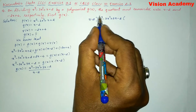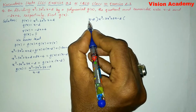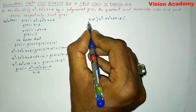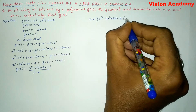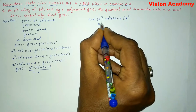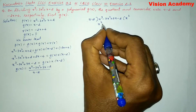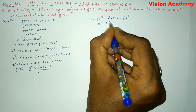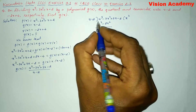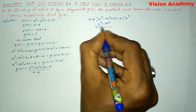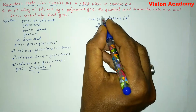Let us consider the first term of the dividend and the first term of the divisor. What do we need to multiply with x to get x³? We need to multiply x². So x² into x is x³, and x² into minus 2 is minus 2x². Now let us subtract — change the signs: plus x³ and minus x³ cancel out.